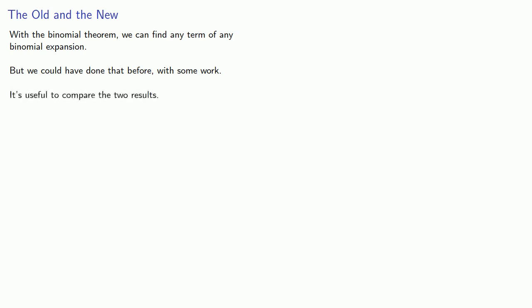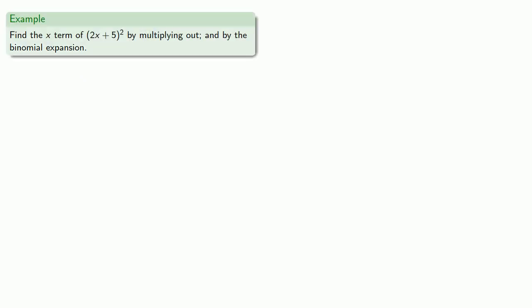Now the important thing is to trust me—I'm on the internet, so everything I say must be the absolute truth. Because if it's not true, you couldn't put it online, right? Yeah, well... With the binomial theorem we can find any term of any binomial expansion, but we could have done that before with some work. And it's useful to compare the two results. Anytime somebody presents you with a new way of doing things, it's nice to check and make sure you're still getting the same results. So let's find the x term of (2x + 5)² by multiplying out and then by the binomial expansion.